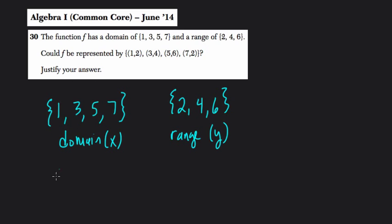Could f be represented by these points: (1,2), (3,4), (5,6), and (7,2)? Could this happen, and they want us to explain.